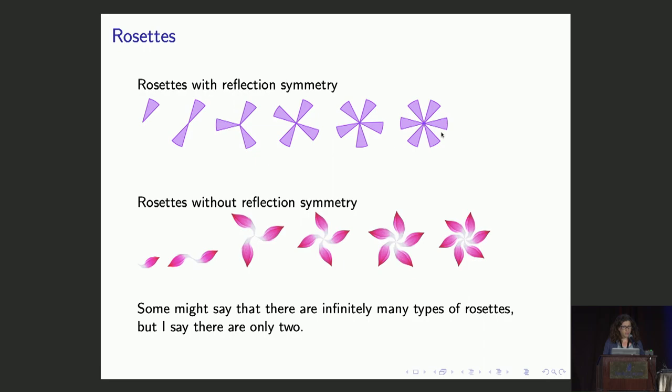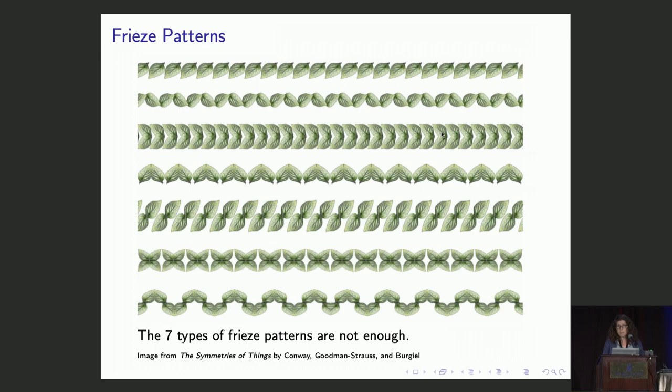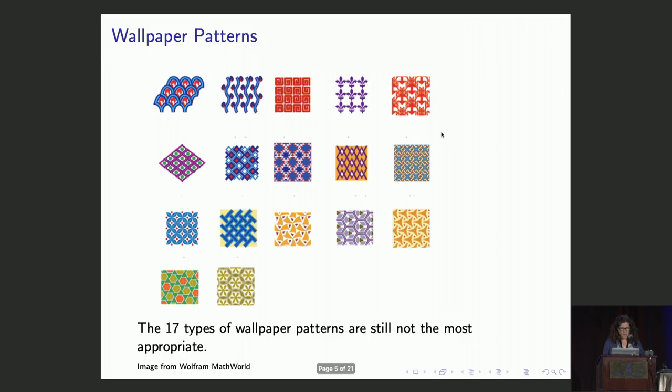Two types of symmetry is definitely not enough to honor all the people in Martin Gardner's sphere of influence. I thought briefly about using Frieze patterns to represent Martin Gardner's mathematical grapevine, but the seven types of Frieze patterns are definitely not enough either.